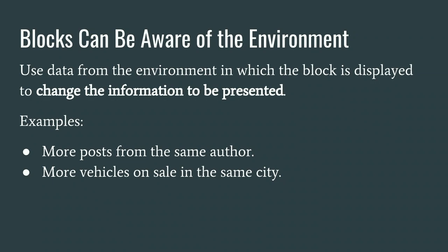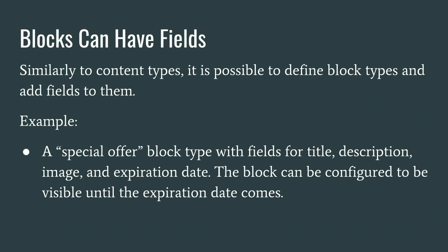Blocks can also be context-aware — aware of the environment where they are printed. For example, a block showing more articles by the same author: when displaying node 5, written by John Doe, the block will ask the page who the author is, then check the database for other articles by John Doe and show them. When you go to a node by Lisa Park, it will show different articles. Blocks in the same way as content types can have fields — for example, a special offer block with a title, description, image, and expiration date. As long as the expiration date hasn't come, it's shown. The ability for blocks to have fields is new in Drupal 8; in Drupal 7 you would use the Bean module.